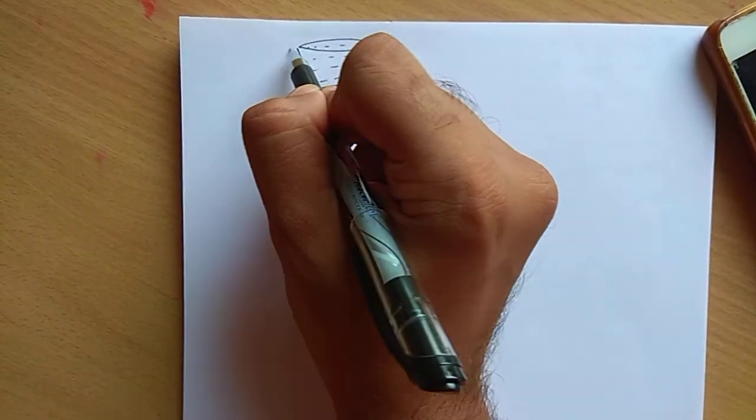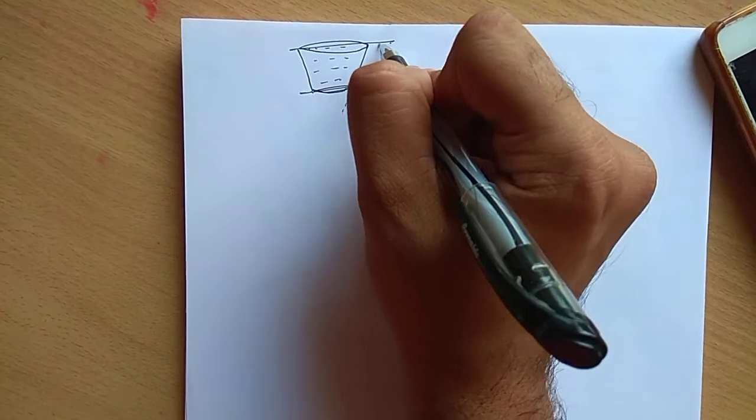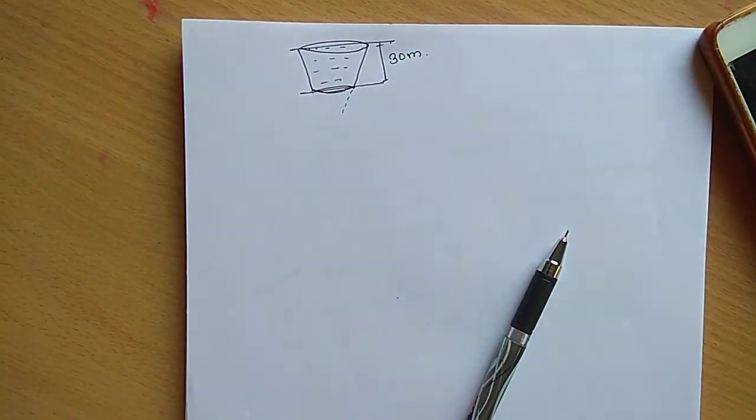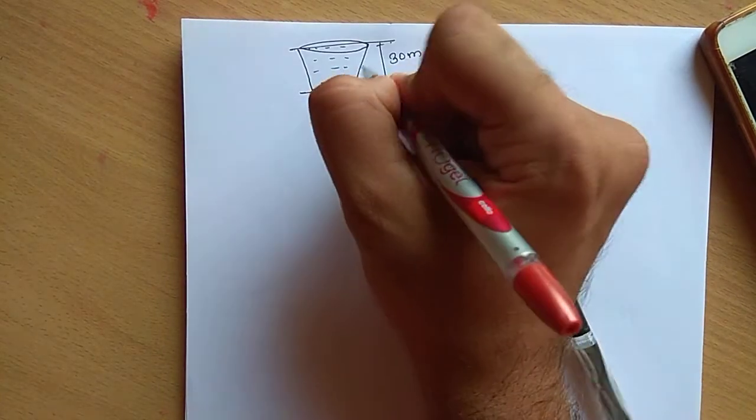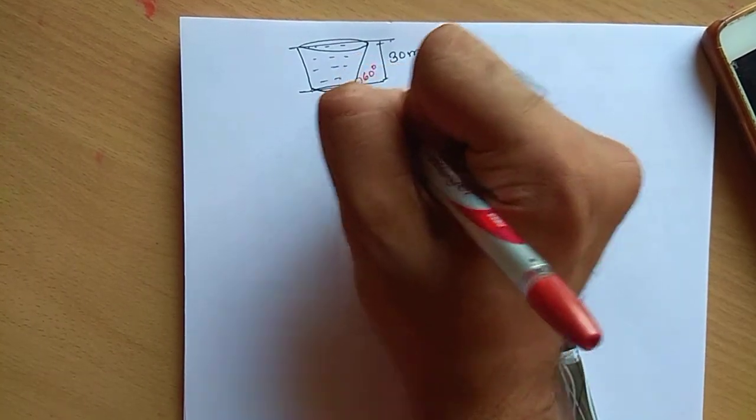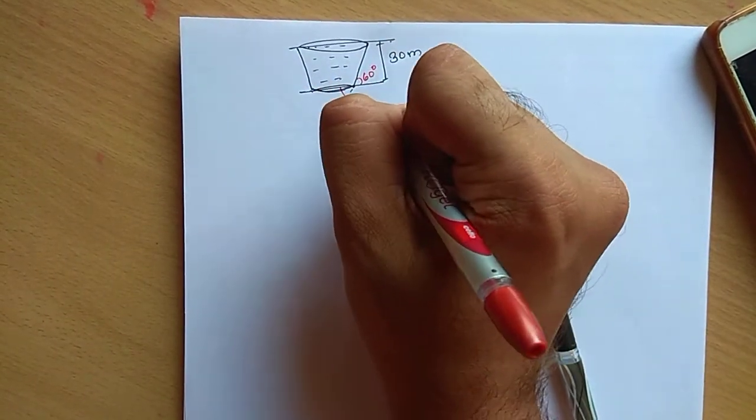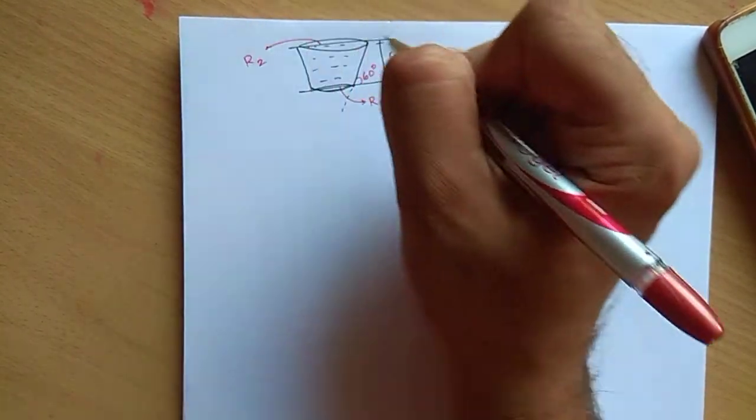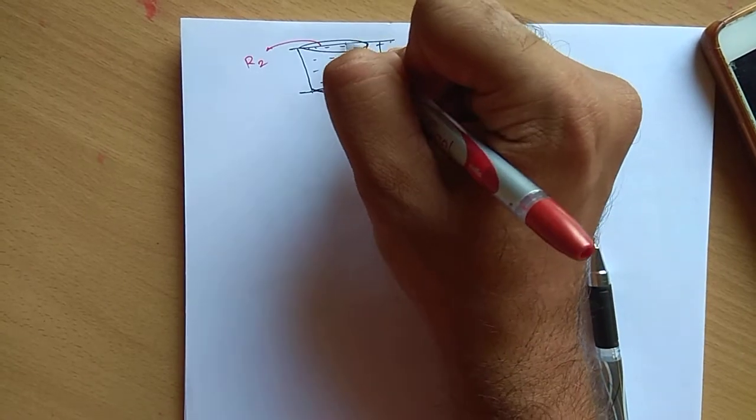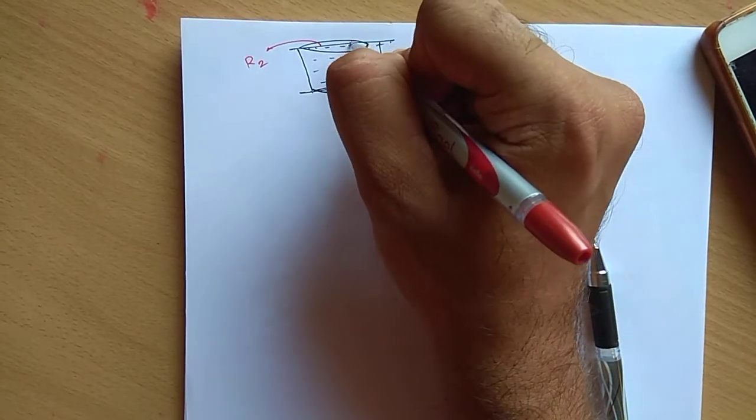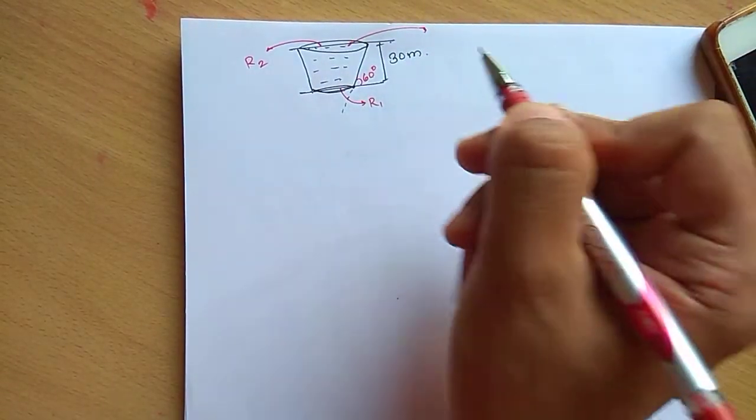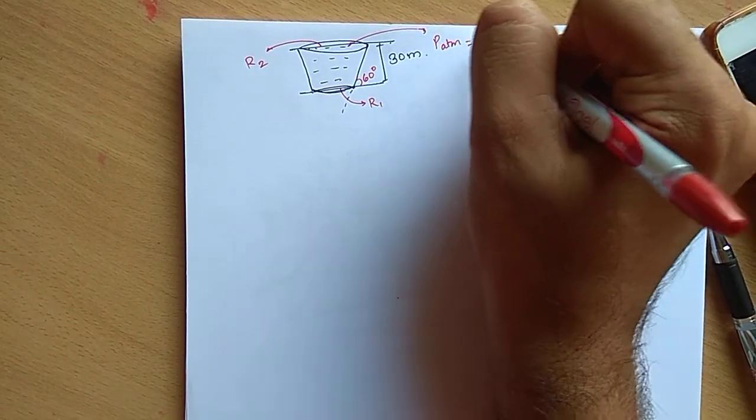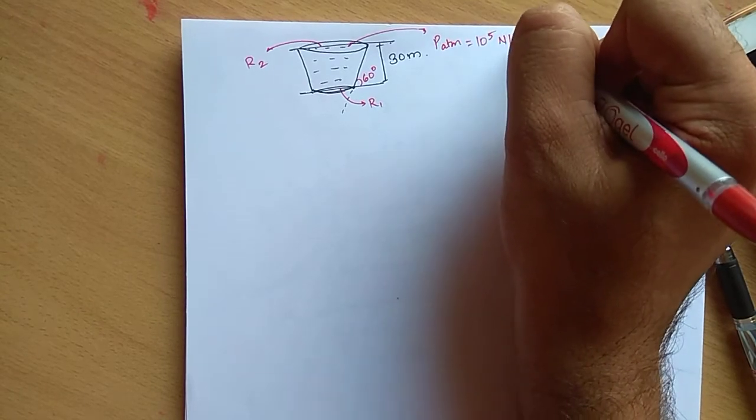Actually the bucket height is small. The height given to you is 30 meters. The angle created here is 60 degrees. The radius of the bottom face is r1, top face radius is r2. The pressure here is atmospheric pressure, that is 10 raised to 5 newton per meter square.